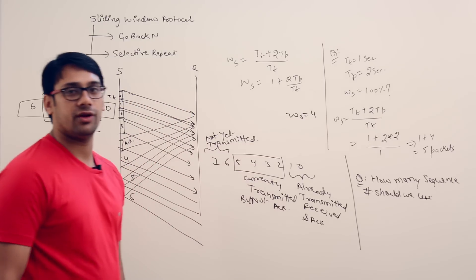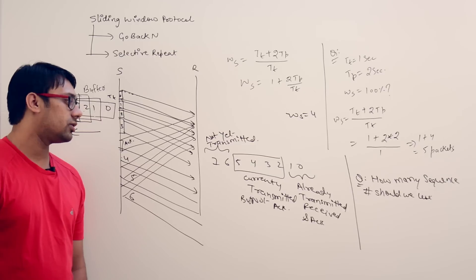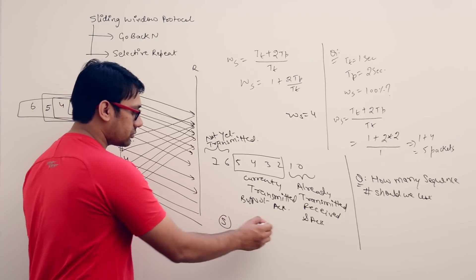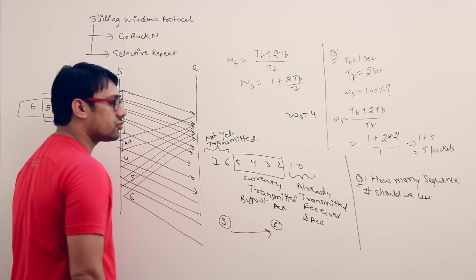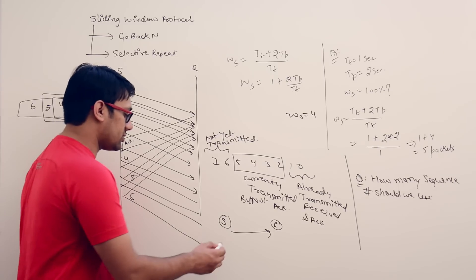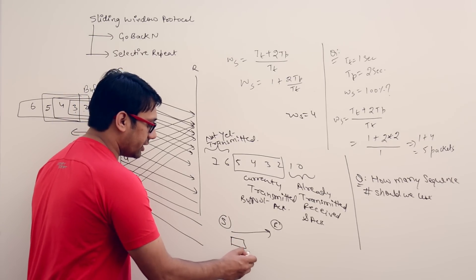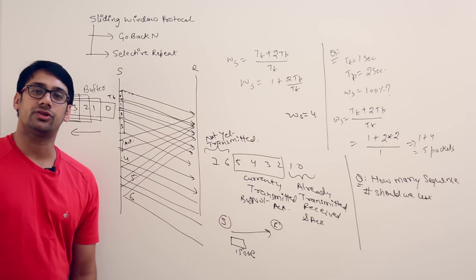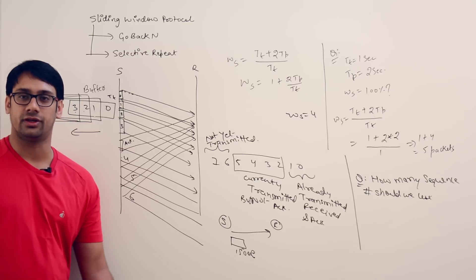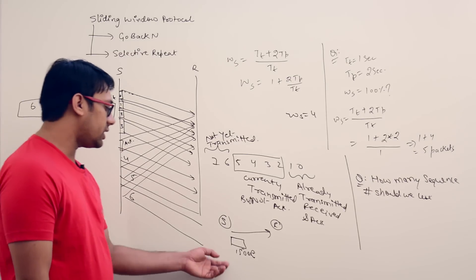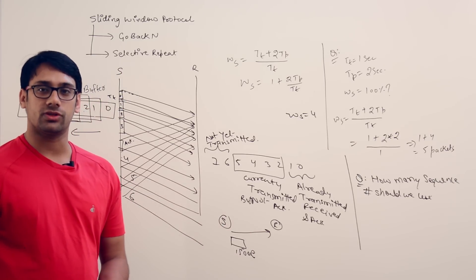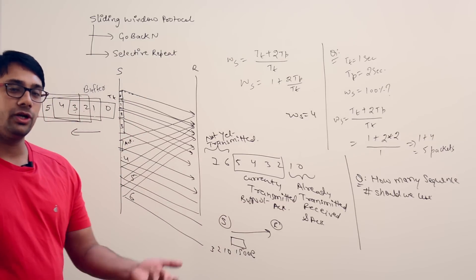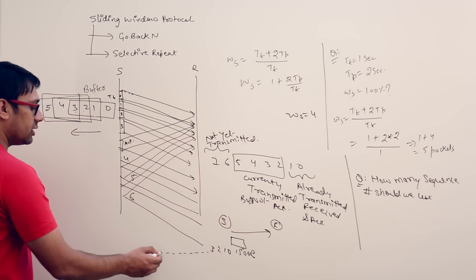Given a scenario where you have unlimited access to sequence numbers, you can always use new ones. For example, assume the packet size is 1500 bytes — within this packet we send data, headers, and sequence numbers. Initially we use low sequence numbers like 1, 2, 3, 4, and so on.